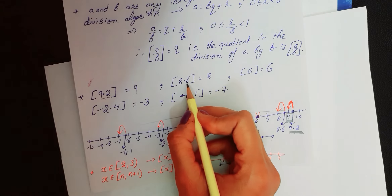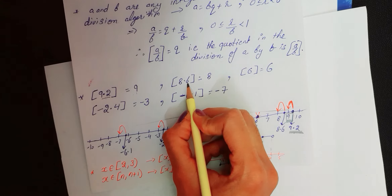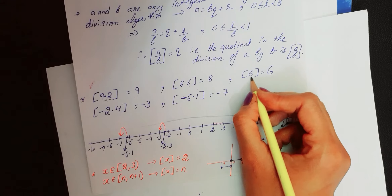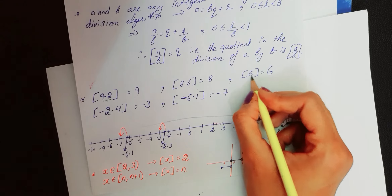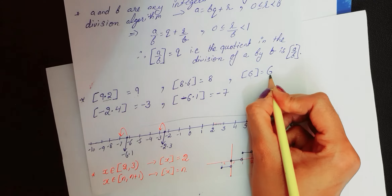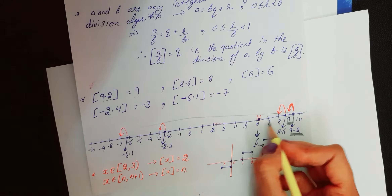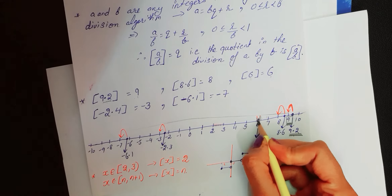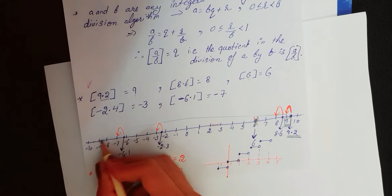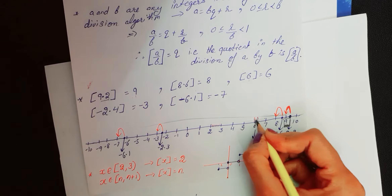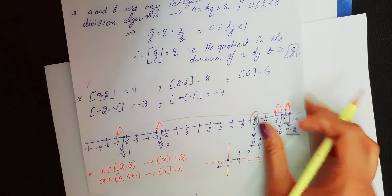Ab tak fractional part wale real numbers ke examples dekhe. Agar khud integer hi hamare paas real number ho, toh uska greatest integer function ka answer kya aata hai? Same integer hi — kyunki obvious hai, jaise 6 hai, 6 ke left mein greatest integer jo less than ya equal to 6 hai, woh khud 6 hi hai.